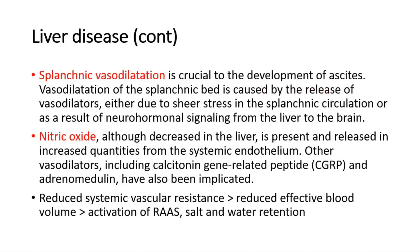Splanchnic vasodilatation is crucial to the development of ascites. Vasodilatation of the splanchnic bed is caused by the release of vasodilators, either due to shear stress in the splanchnic circulation, or as a result of neurohormonal signaling from the liver to the brain. Nitric oxide, although decreased in the liver, is present and released in increased quantities from the systemic endothelium. Other vasodilators, including calcitonin gene-related peptide and adrenomedullin, have also been implicated. These all cause reduced systemic vascular resistance, reduced effective blood volume, activation of RAAS, and hence salt and water retention.